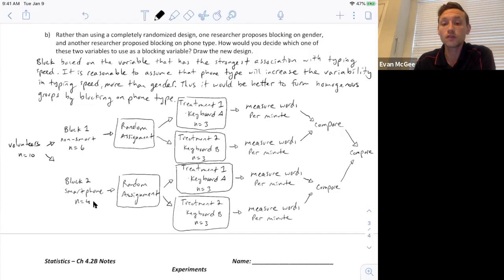And then we'll do the same for smartphone users. There were four smartphone users, so we'll take them and randomly assign two to keyboard A, randomly assign two to keyboard B, which that says three, it should be two there. Let's fix that. There we go. Now it says two in A and two using keyboard B, and we'll measure theirs words per minute, and then we'll compare from block two, and then we'll make comparisons between the two blocks.